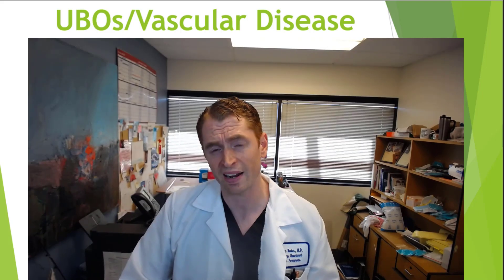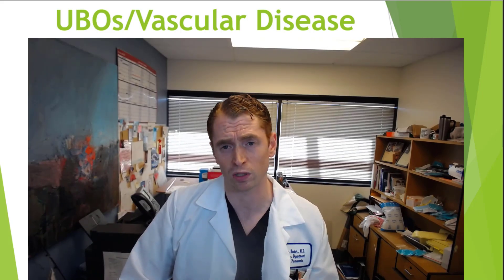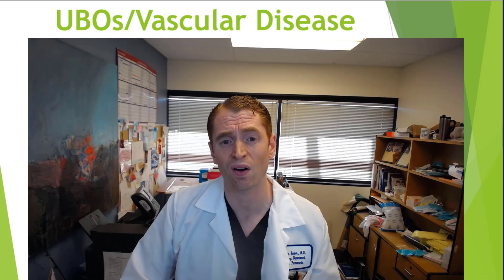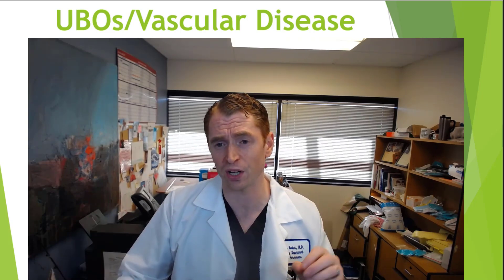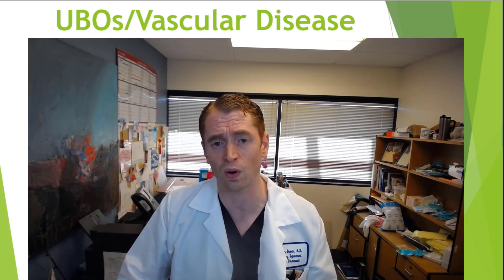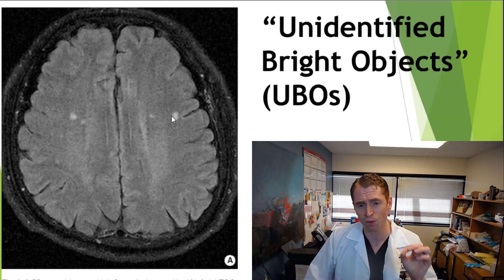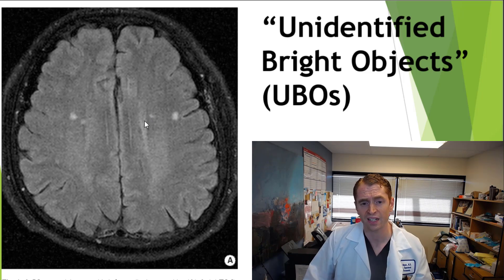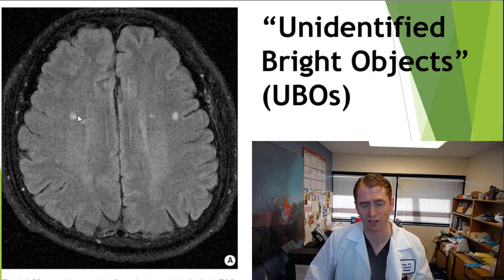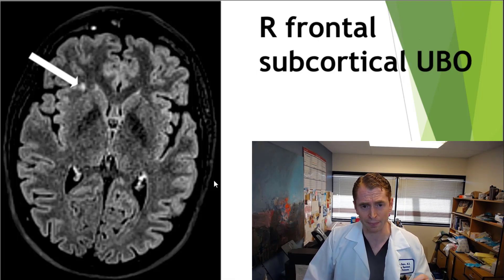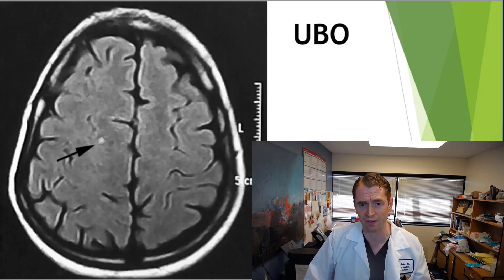Next we'll move to MRI findings that are not typical of multiple sclerosis — changes associated with UBOs, vascular disease, or leukoaraiosis. This axial slice shows small and poorly defined T2-bright lesions in the subcortical white matter. They're not periventricular, not touching the ventricles, relatively small, and a little bit indistinct. Here's another example — a right frontal subcortical UBO, very benign in appearance.